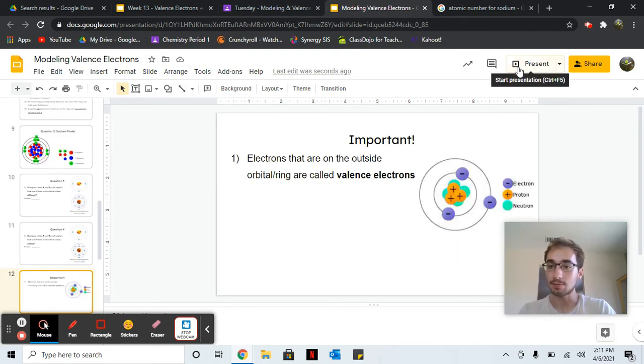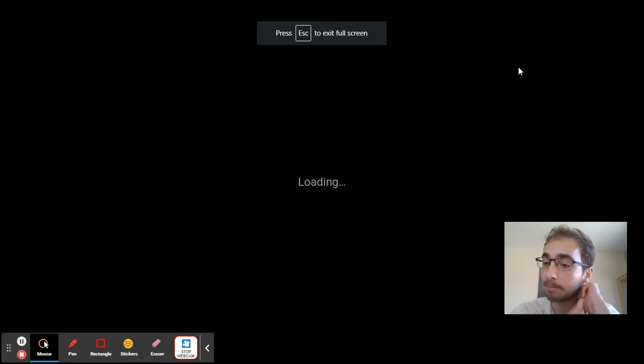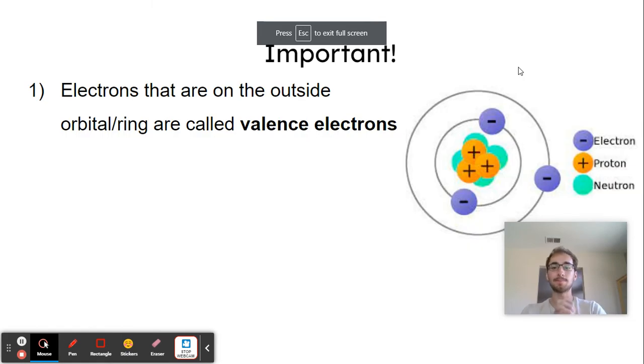The next thing, this is very important. You have to remember, memorize what this word means. Electrons, like this one, that are on the outside orbital. Only the ones that are on the outside orbital are called valence electrons. The valence part means that they're on the outside orbital, the last orbital. All the other electrons are not valence, just the ones on the outside.